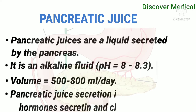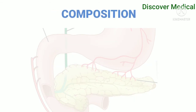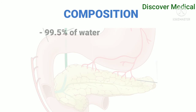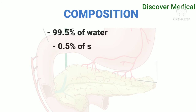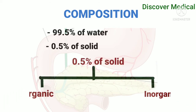Pancreatic juice secretion is regulated by the hormones secretin and cholecystokinin. Composition: 99.5% water and 0.5% solids. The 0.5% solids consist of organic and inorganic components.